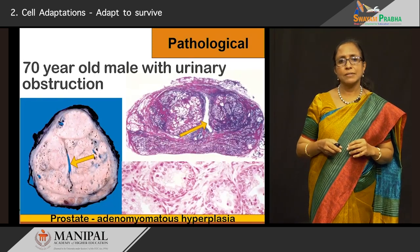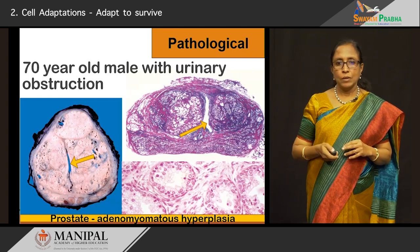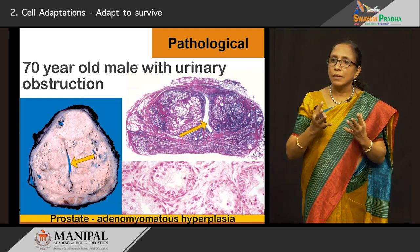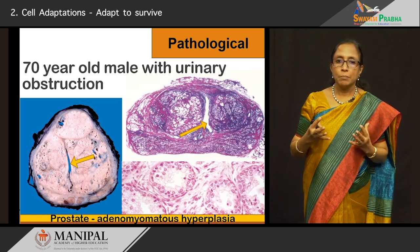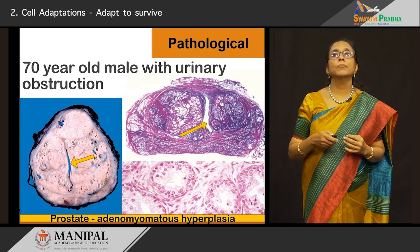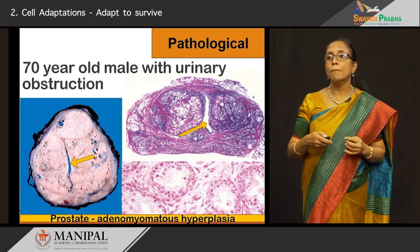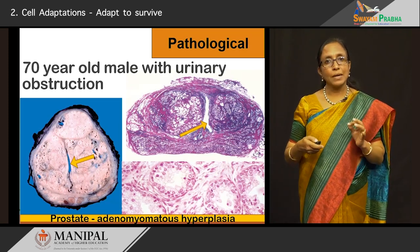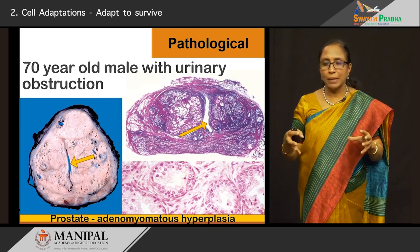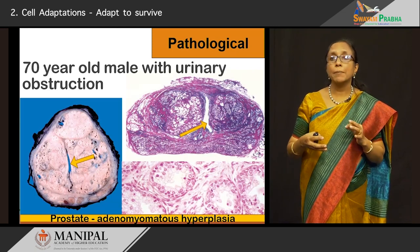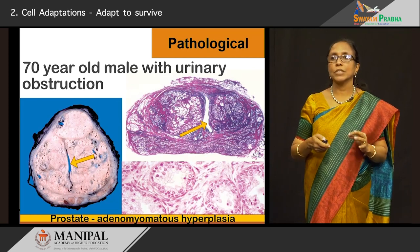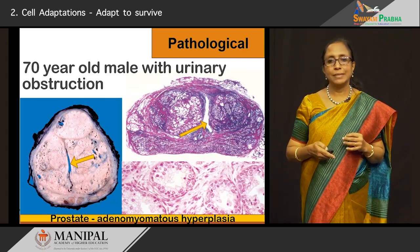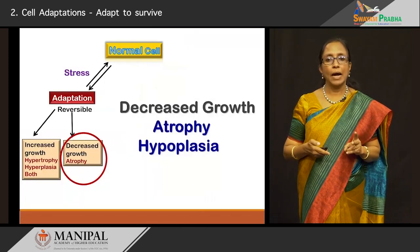Another example, a pathological condition: a 70-year-old male with urinary obstruction. The prostate, lying just below the bladder neck, is enlarged because of hyperplasia of the prostatic glands — called adenomyomatous hyperplasia. There is hyperplasia of the glands, with so many glands proliferating back to back, together with hyperplasia of the smooth muscle. Both are proliferating, giving rise to prostatic hyperplasia causing urinary obstruction in the older age group. That is another pathological condition where we see both hypertrophy and hyperplasia.